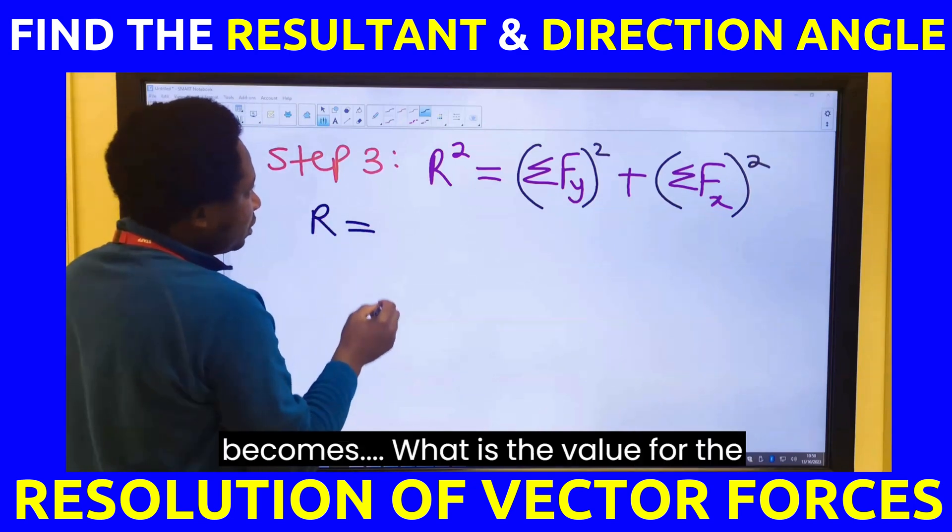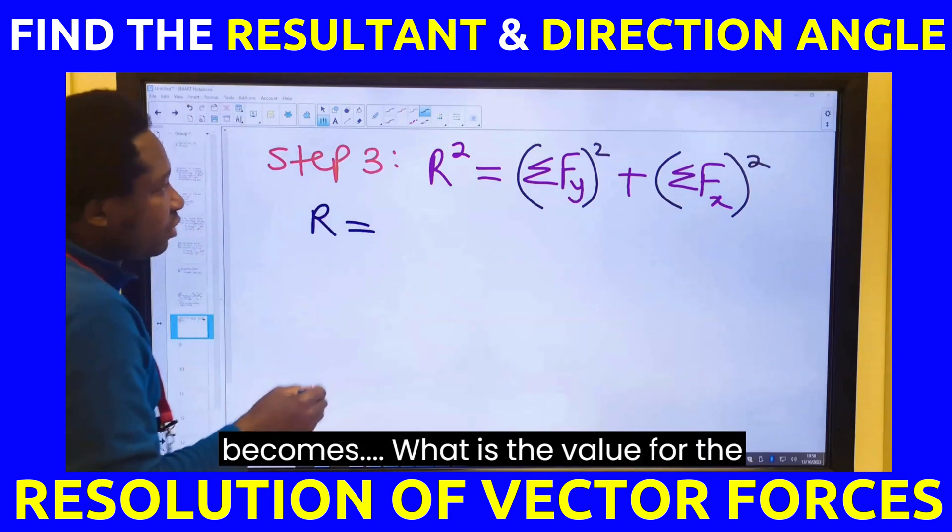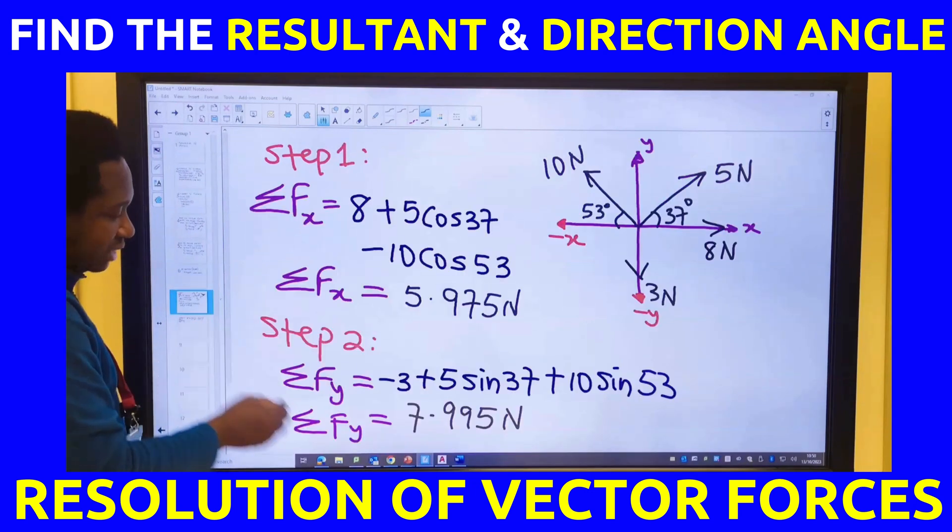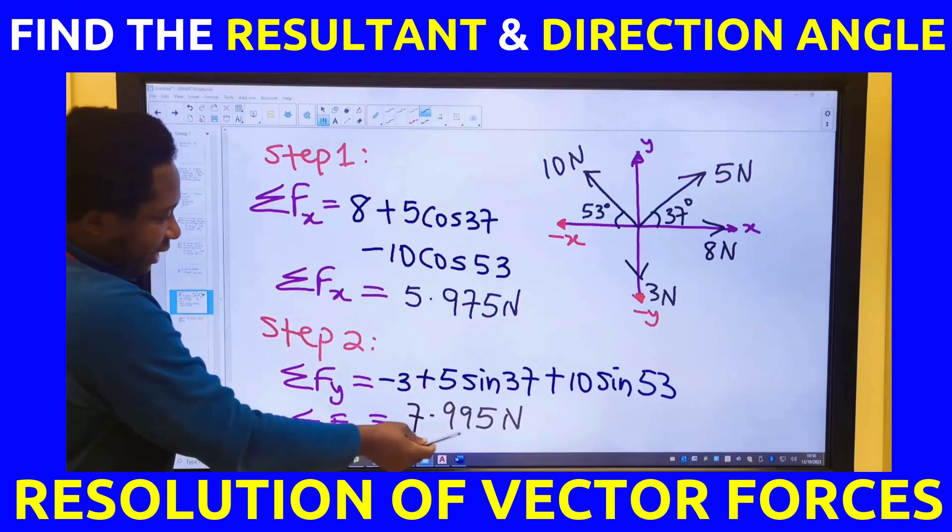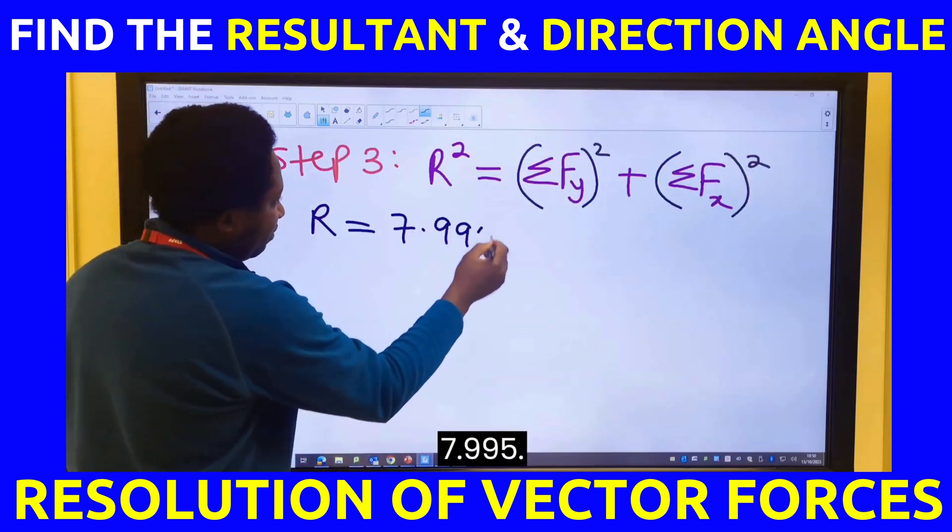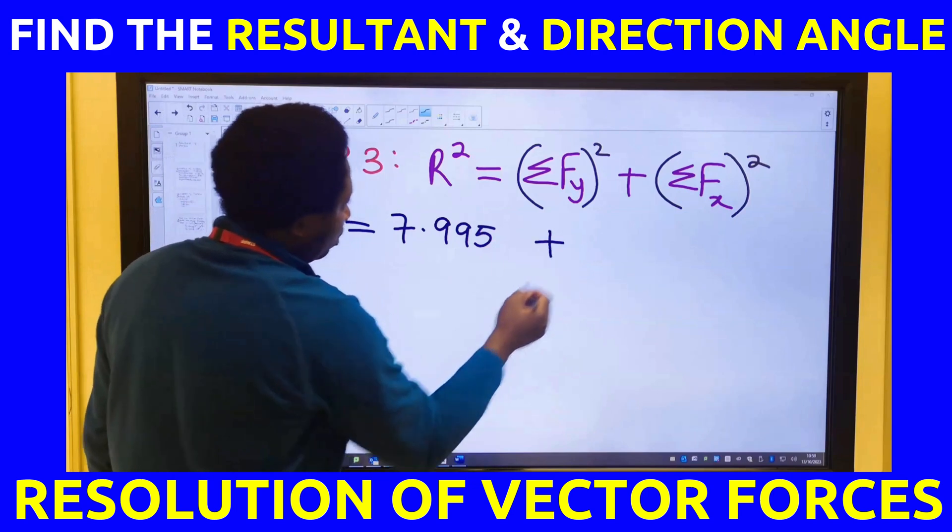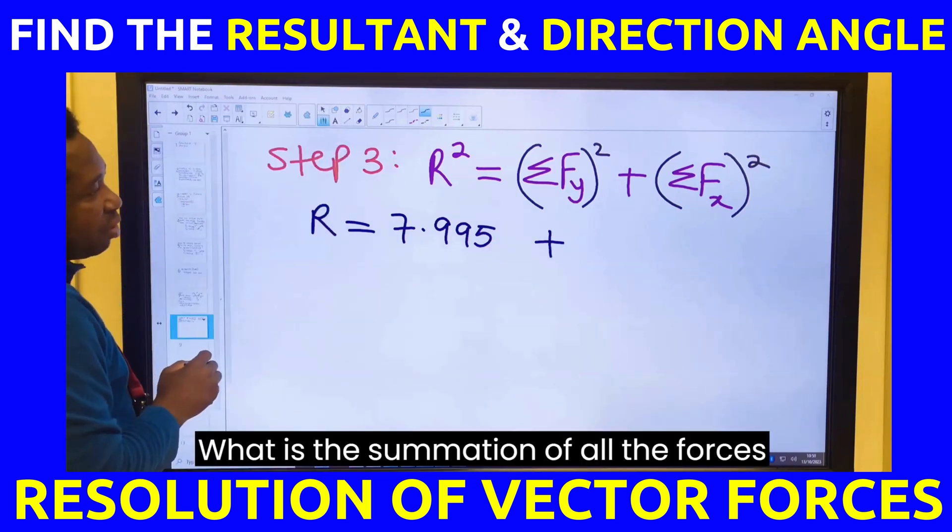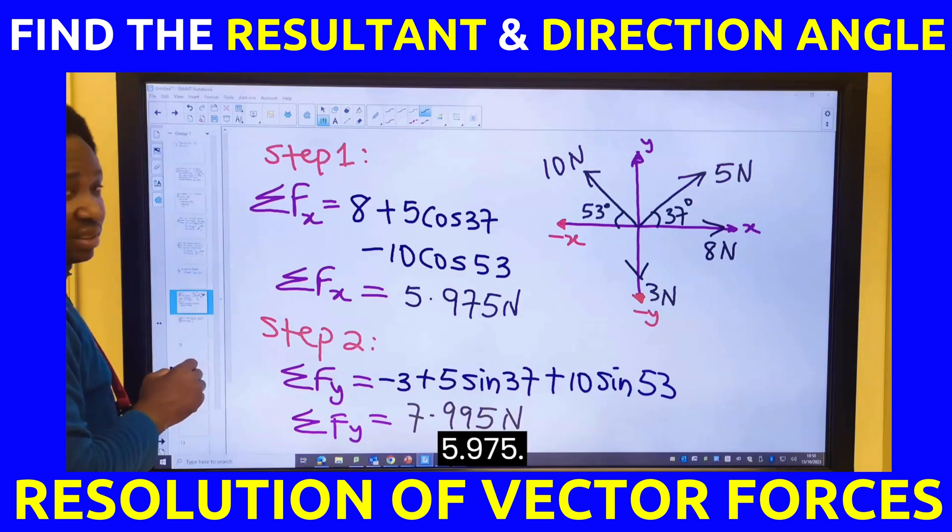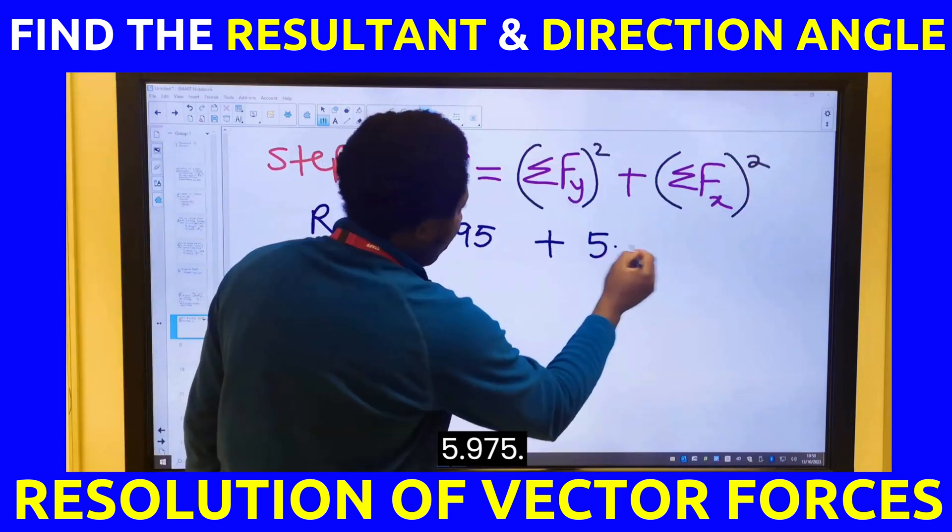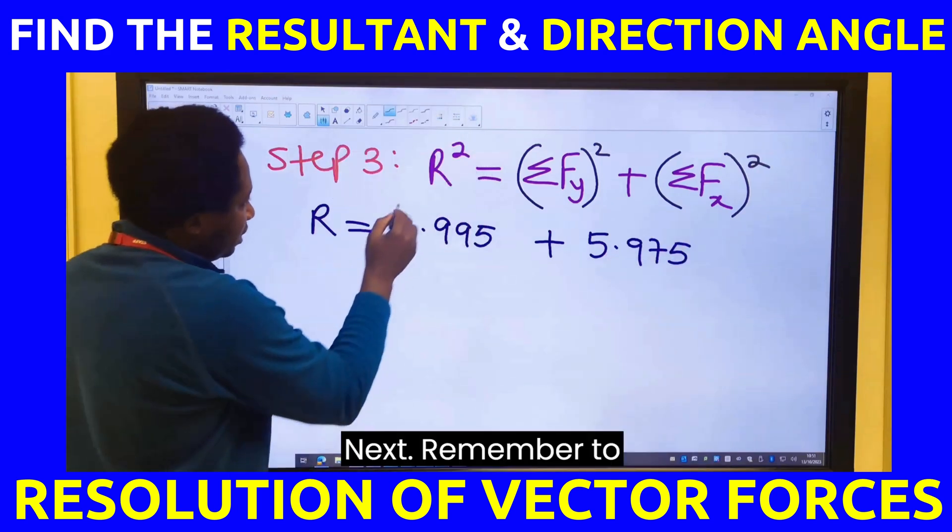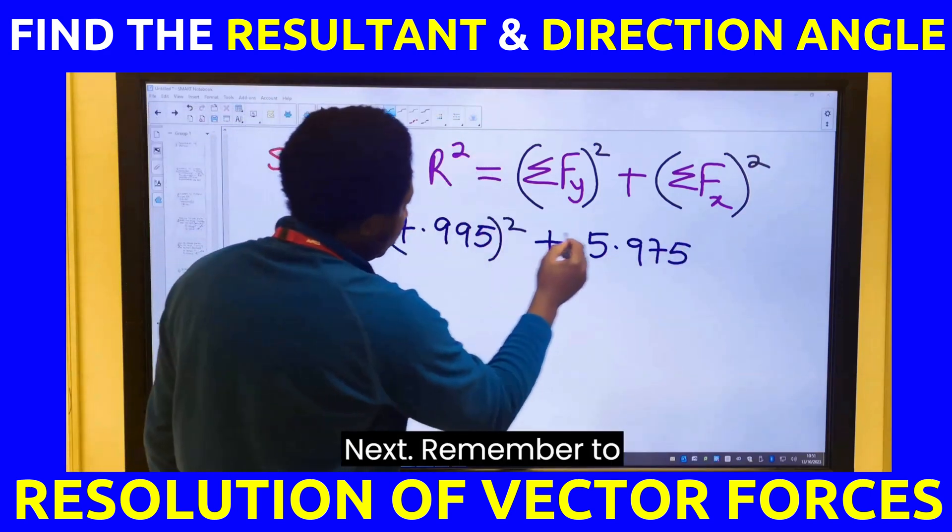So, our R becomes, what is the value for the summation of all the forces on the y-axis? 7.995. What is the summation of all the forces on the x-axis? 5.975. Next, remember to square each.